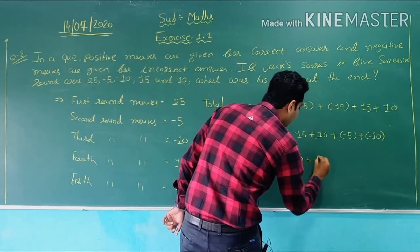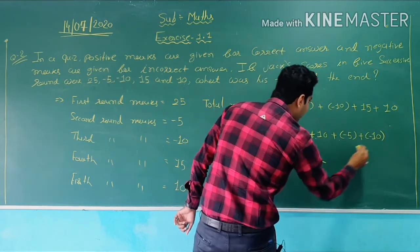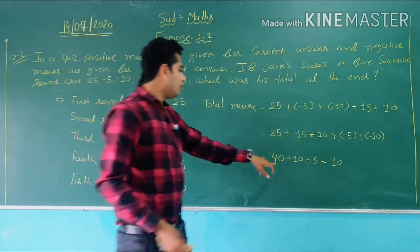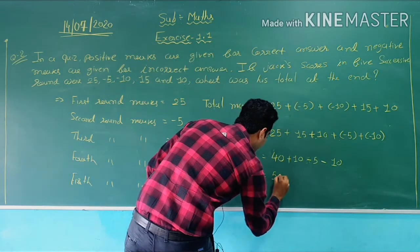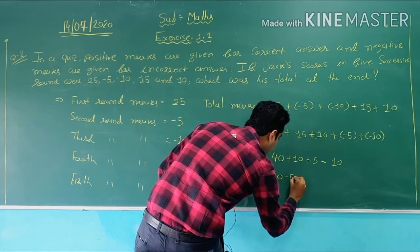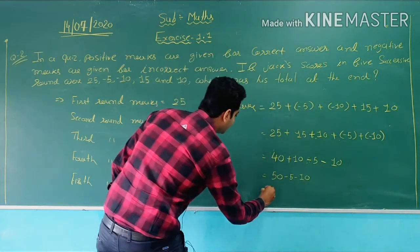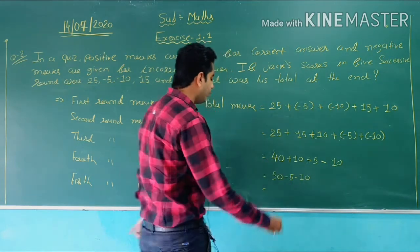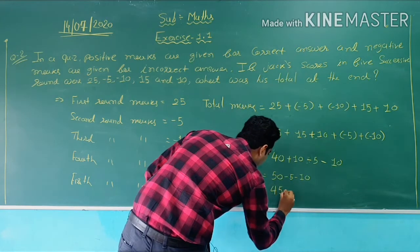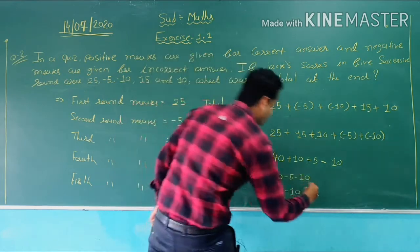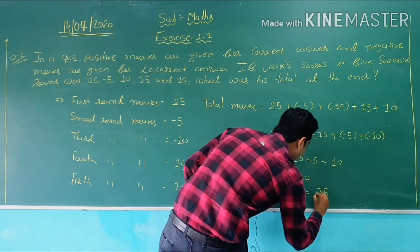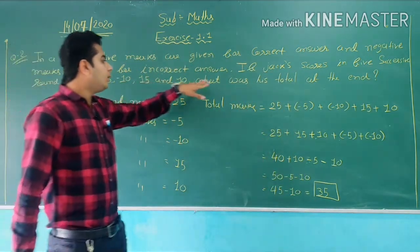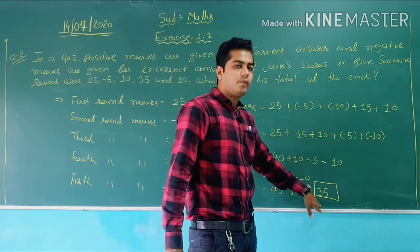It will be minus plus minus, so it will be 10 minus 10. Again, 40 plus 10 is 50, minus 5. So 50 minus 5 is 45, and the remaining is 10. Now 45 minus 10 is 35. So our final answer is 35. After 5 rounds, he got a total of 35 marks.